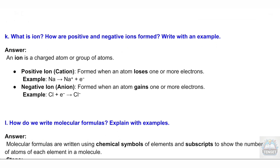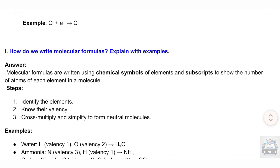K. What is an ion? How are positive and negative ions formed? Write with an example. Answer: An ion is a charged atom or group of atoms. Positive ion (cation) is formed when an atom loses one or more electrons. Example: Na → Na⁺ + e⁻. Negative ion (anion) is formed when an atom gains one or more electrons. Example: Cl + e⁻ → Cl⁻.